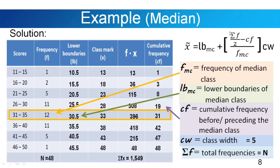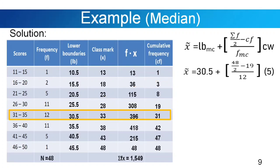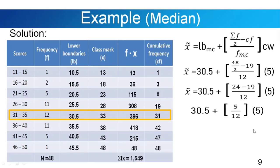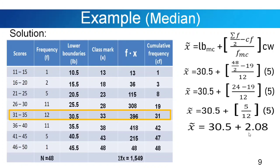Now substituting the values into the median formula: x̄ = 30.5 + [(48/2 − 19) / 12] × 5. Simplifying: 48 divided by 2 is 24; 24 minus 19 is 5; 5 divided by 12 gives 0.4167; multiplied by 5 gives approximately 3.08. So we have 30.5 plus 3.08, and our median is equal to 32.38.